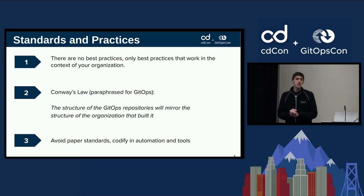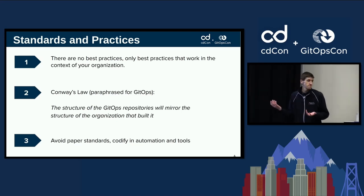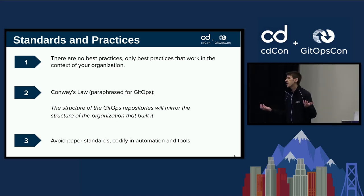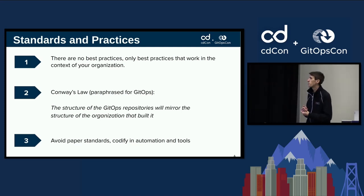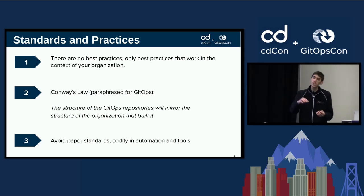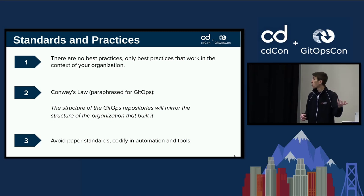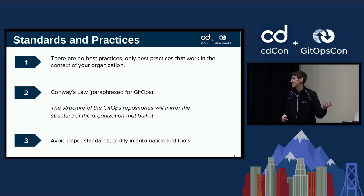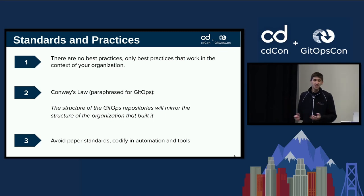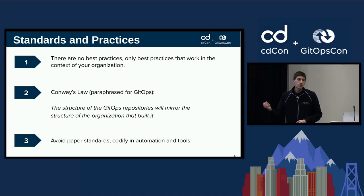There is no one best practice. Conway's Law is always going to prevail — your GitOps processes are always going to be a reflection of your organization, which is why every use case is different once you sprinkle in those organizational constraints. Make sure these don't become paper standards: document them, version them, make sure they're well-established and declarative so others know about them. Don't have a Jenkins server sitting under your desk that nobody knows about — comply to these standards and be successful in your GitOps journey.